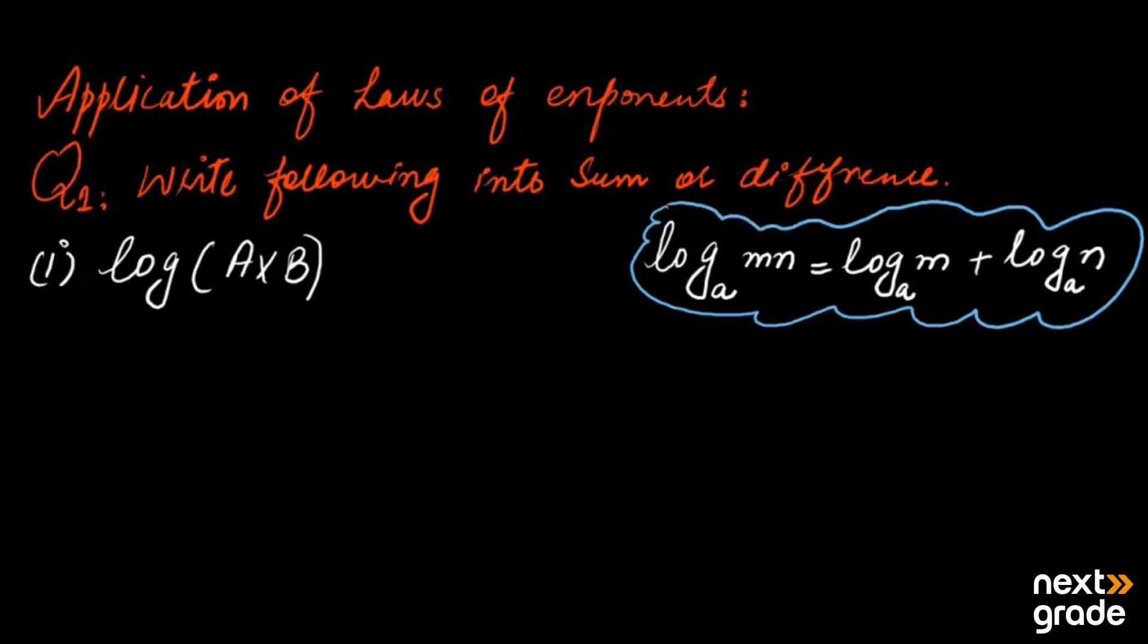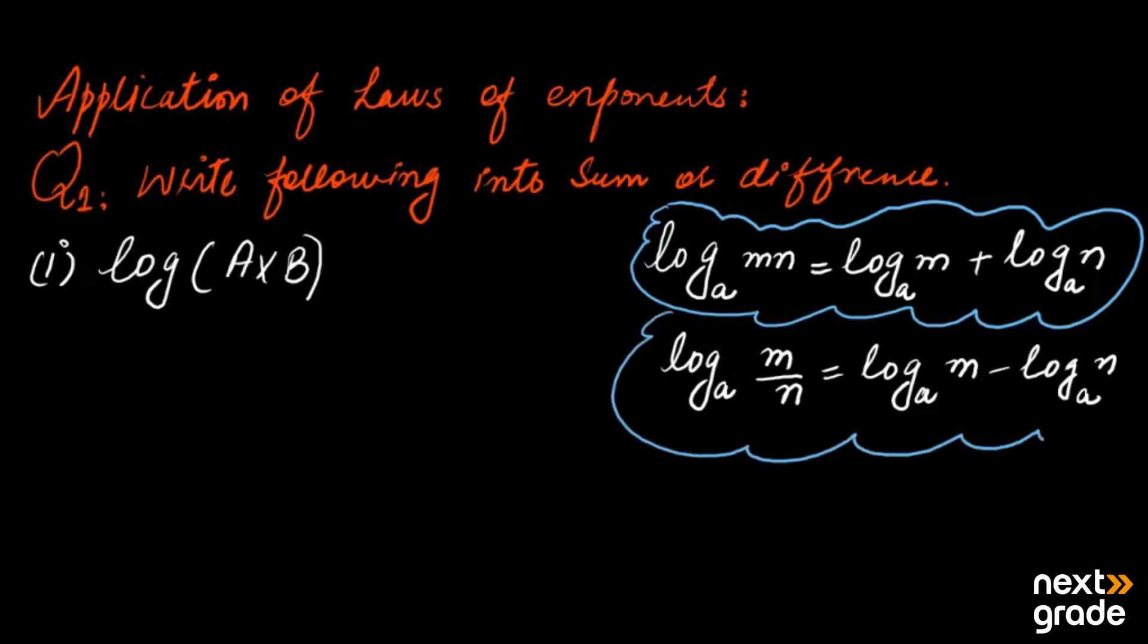Now, we have also seen that if we have a division sign M upon N, then we will use log of M minus log of N with base A. So this is the second property that we have here—the subtraction property. We will now use these properties.